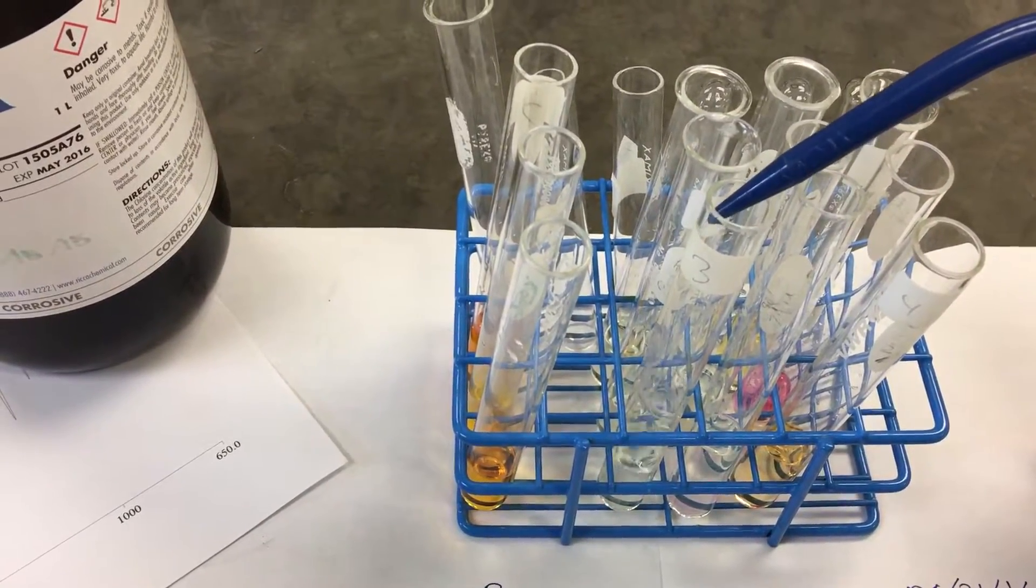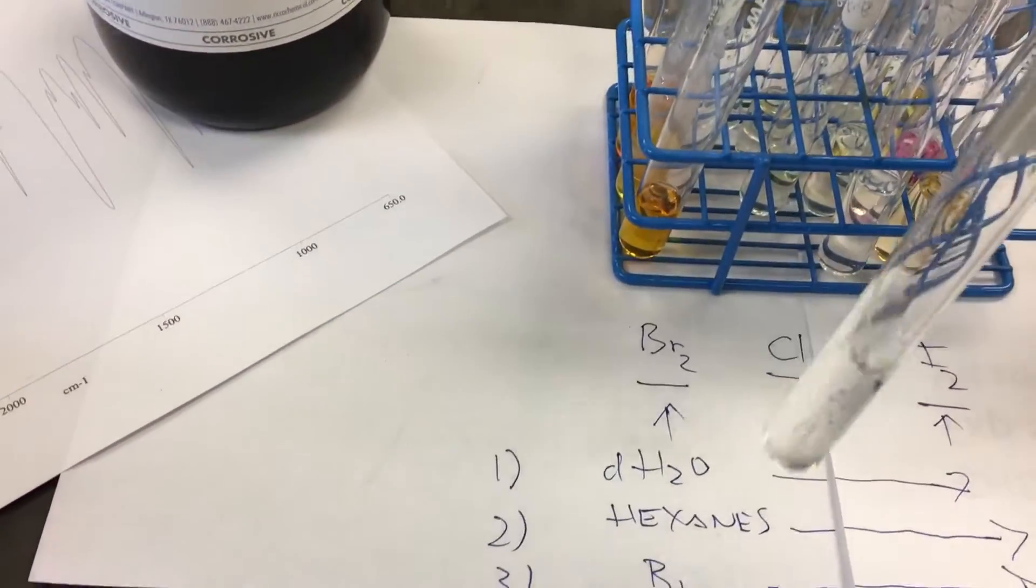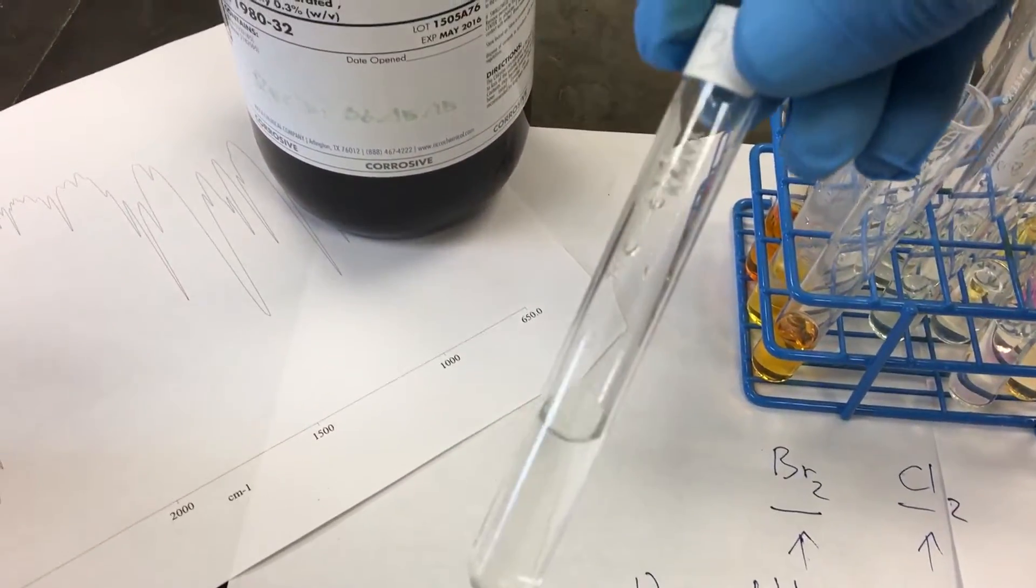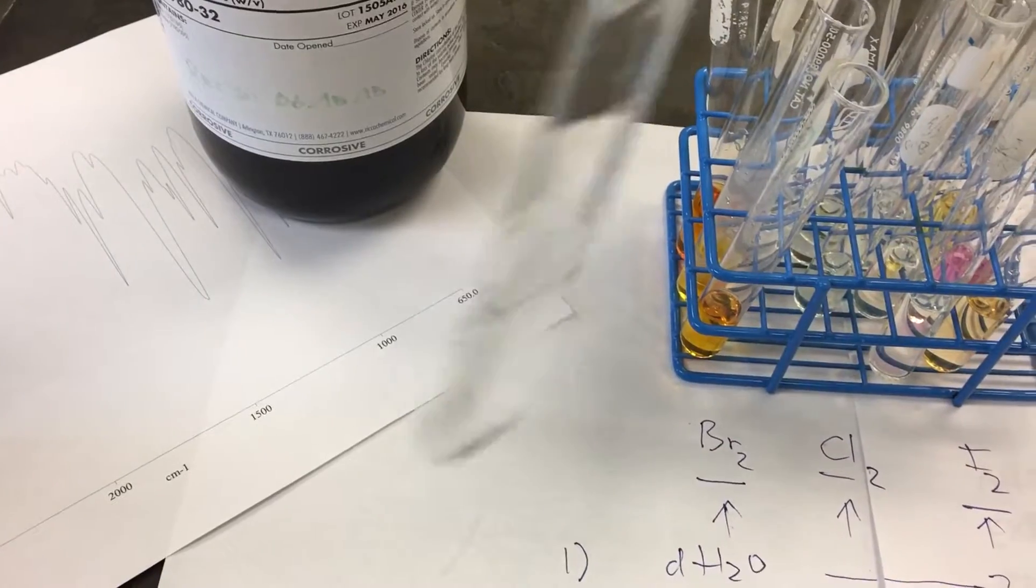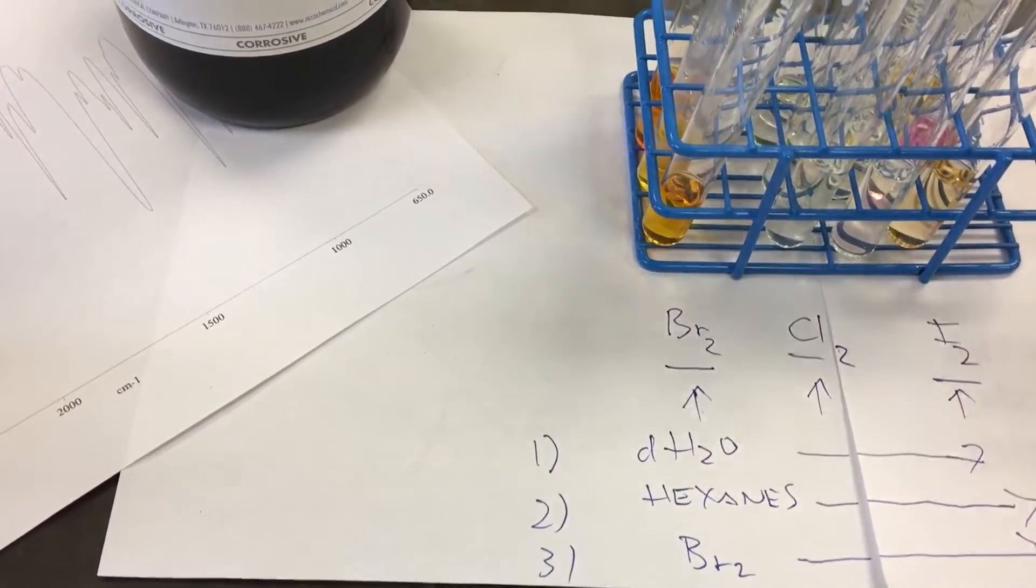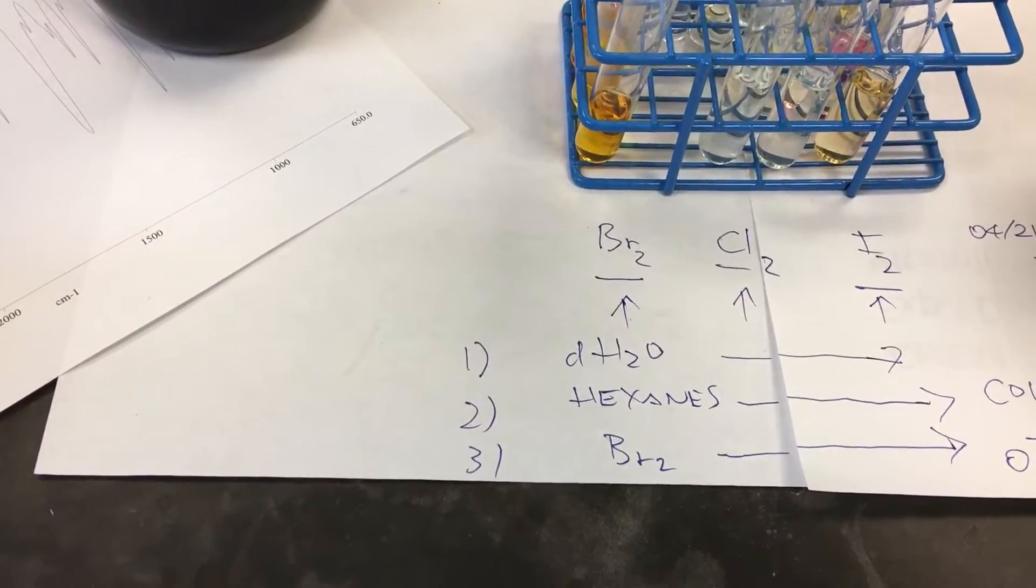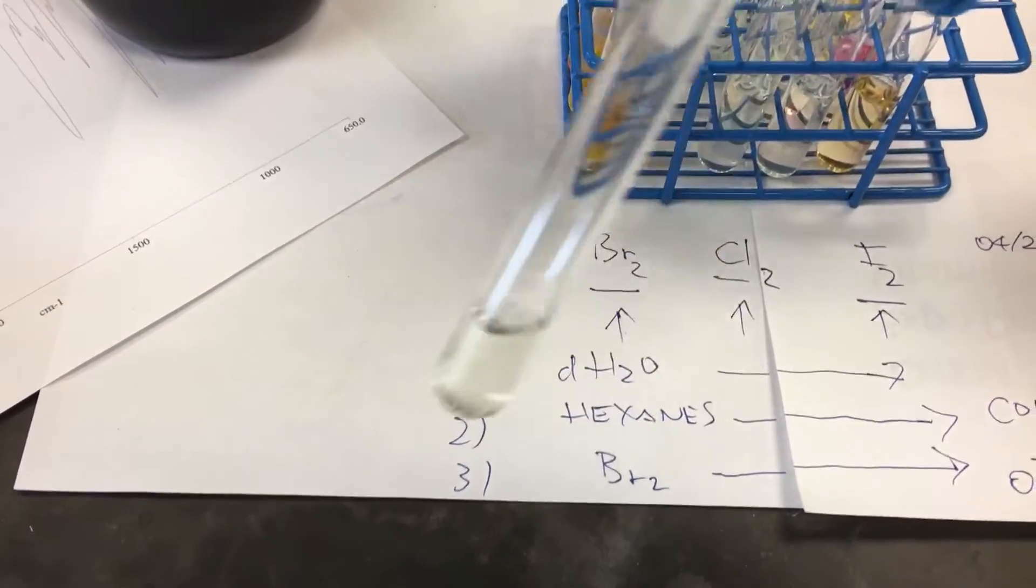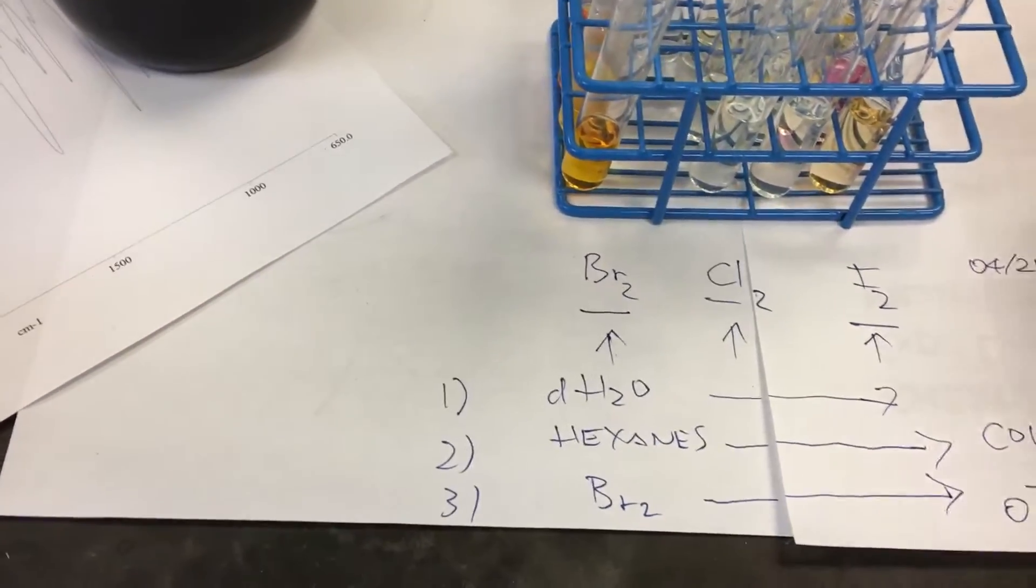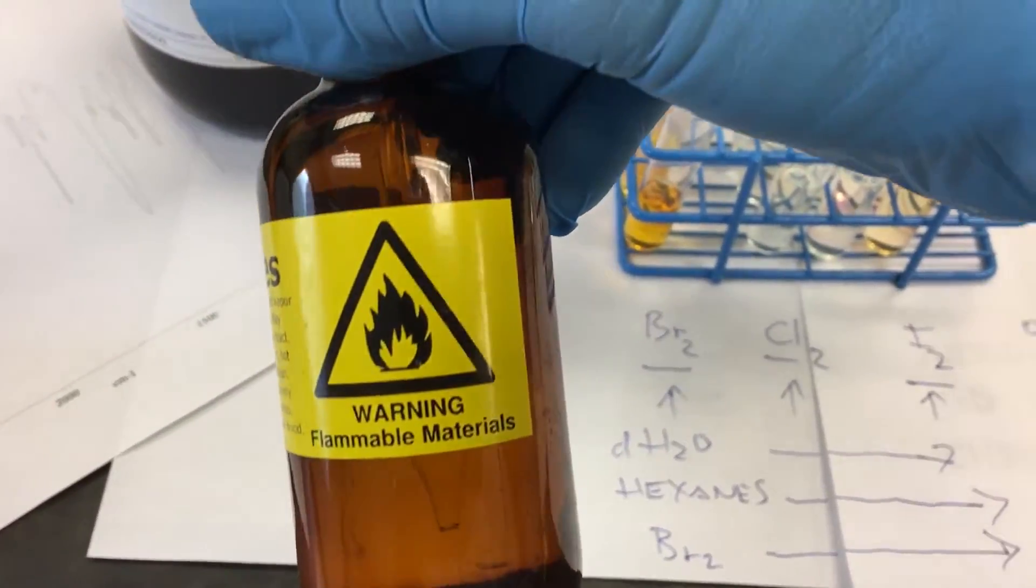Next one up, we're going to retest the chlorine satellite water. I have it in here with the hexanes. Right there. Make sure this one is flammable materials.